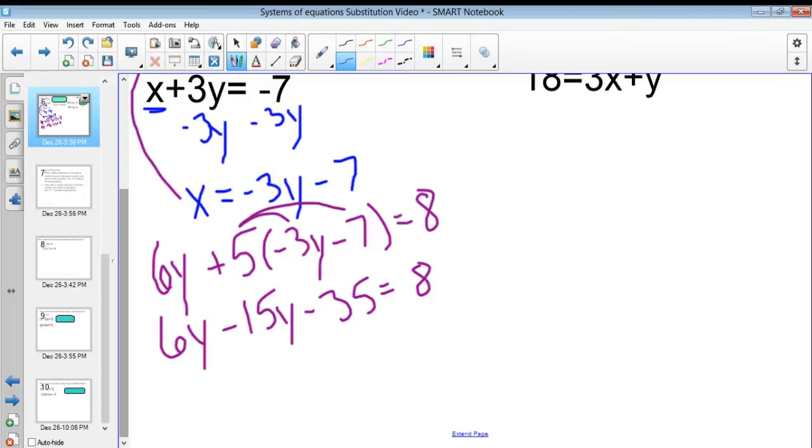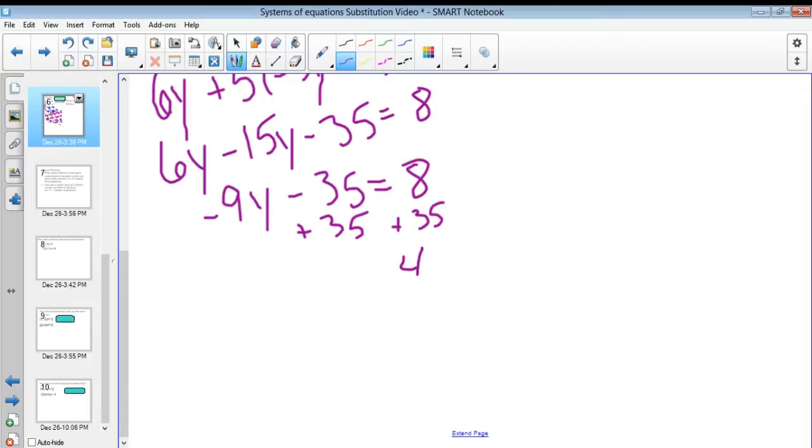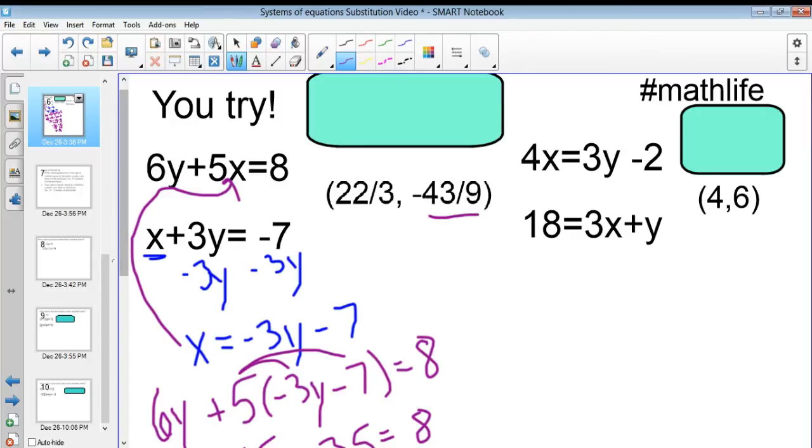And now I'm starting to write slanted. Then, combine the like terms. So, negative 9y minus 35 equals 8. Add the 35 over. Of course, to both sides. And that will give me negative 9y equals 43. So, I, of course, divide by 9 there and I get y equals 43 over negative 9. Which is what we got over here.